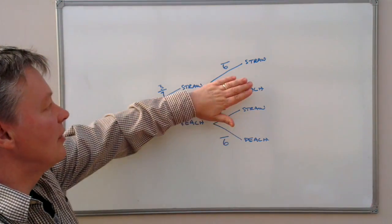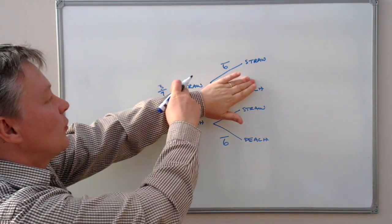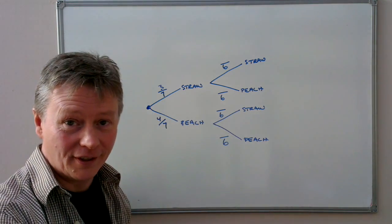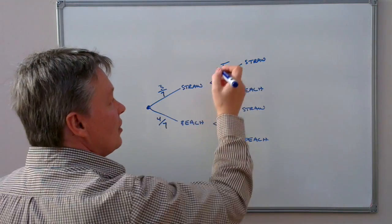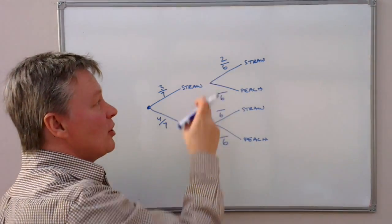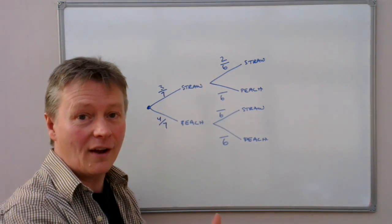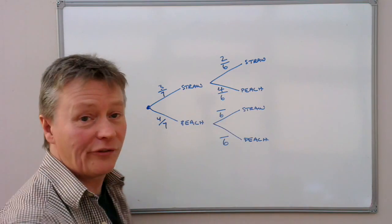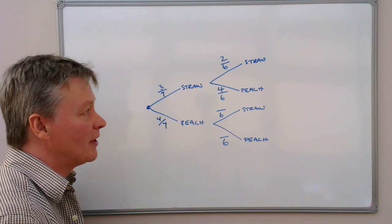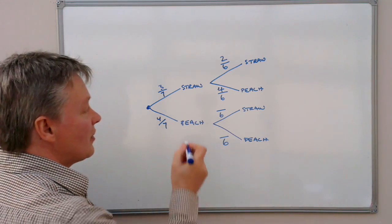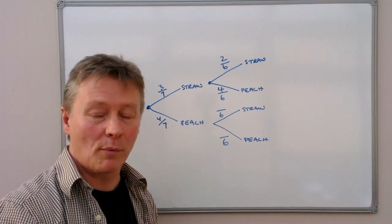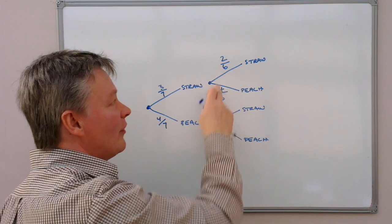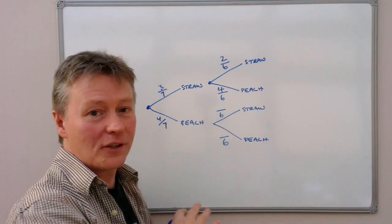Let's say she picks another strawberry yogurt. She's already had one, so of the three that were in the fridge originally, only two are left. The probability of picking another strawberry is two out of six, because there are six yogurts in the fridge of which only two are strawberry. The peach yogurts were not picked the first time, so there are still four left, giving four out of six. An important check: two sixths plus four sixths equals one, confirming certainty — there will definitely be an outcome.